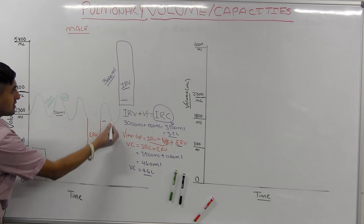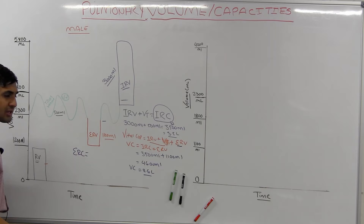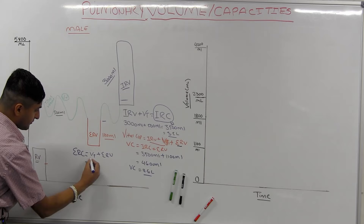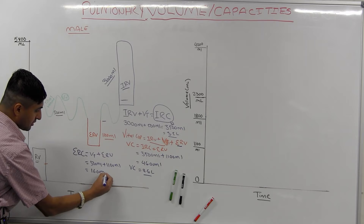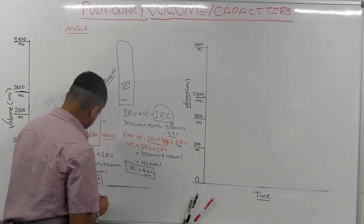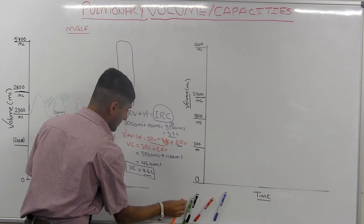There's also an expiratory reserve capacitance: tidal volume plus expiratory reserve volume. So 500 ml plus 1100 ml equals 1600 ml, or 1.6 liters. This represents the air you can breathe out from tidal level plus all the reserve expiratory air.